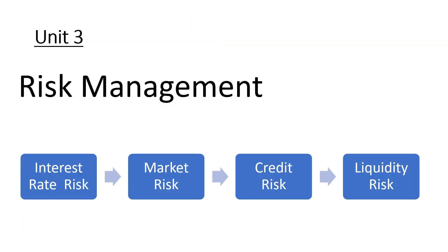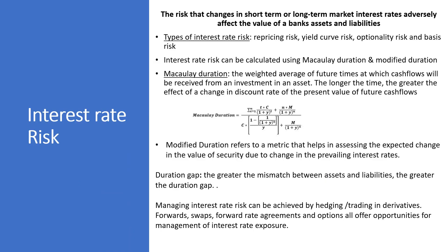Unit 3: Risk Management. In this unit we'll discuss four types of risk: interest rate risk, market risk, credit risk, and liquidity risk. Interest rate risk is the risk that changes in short-term or long-term market interest rates adversely affect the value of a bank's assets and liabilities. The types include repricing risk, yield curve risk, optionality risk, and basis risk. It can be calculated using the Macaulay duration or modified duration, and the duration gap is the mismatch between assets and liabilities. Interest rate risk can be managed by hedging, trading in derivatives, forward swaps, forward rate agreements, and options.